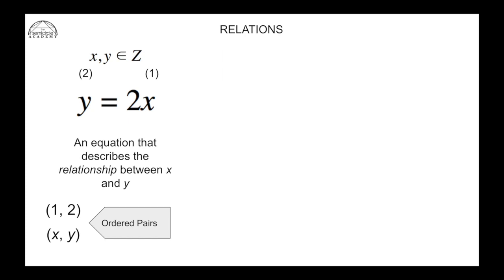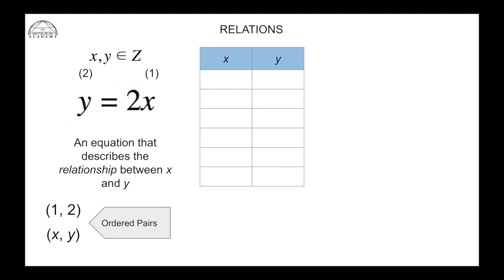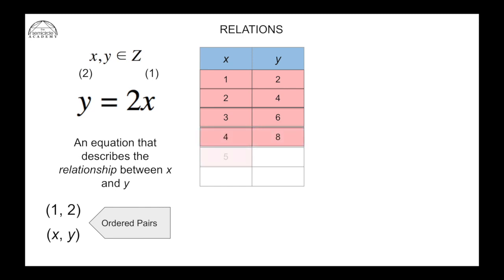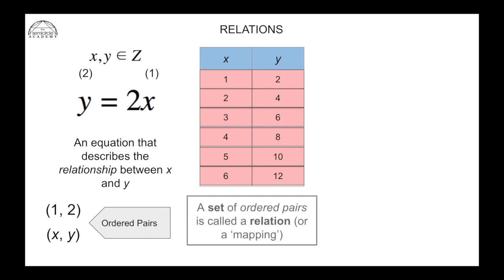We can have many ordered pairs. This pair is just x = 1 giving a corresponding y = 2, but let's look at other ordered pairs. From this equation: when x = 1, y = 2; x = 2, y = 4; x = 3, y = 6; x = 4, y = 8; x = 5, y = 10; x = 6, y = 12. We can see the relationship that y is always two times greater than x.